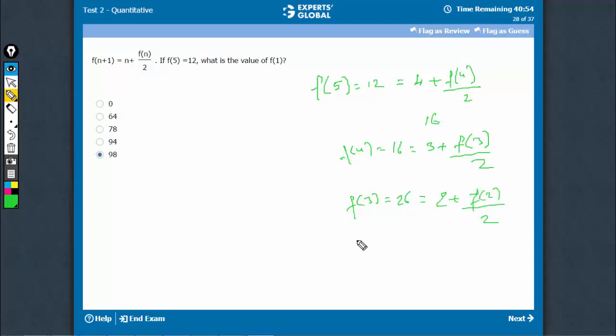26 minus 2, 24 into 2, 48. So F2 is equal to 48. Now F2 is N plus 1, so that means N is equal to 1. This is equal to 1 plus F1 upon 2.